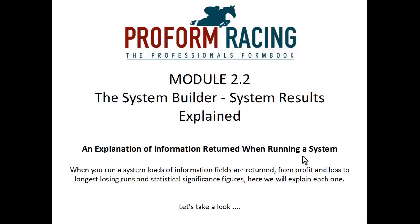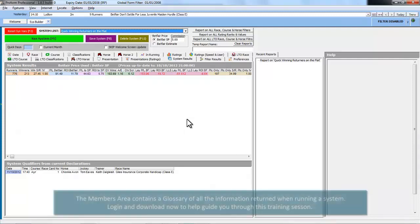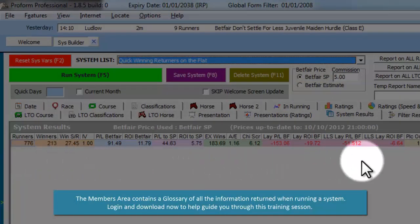When you run a system, loads of information fields are returned, from profit and loss to longest losing runs and statistical significance figures. Here we will explain each one. We are back in the System Builder and we have the system selected that we went through in Module 2.1. We've run the system and these are the system results returned.